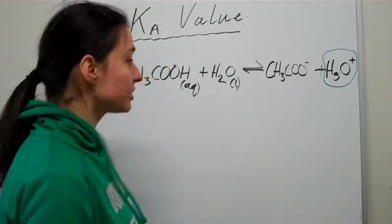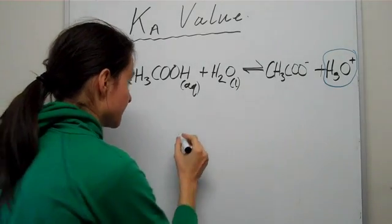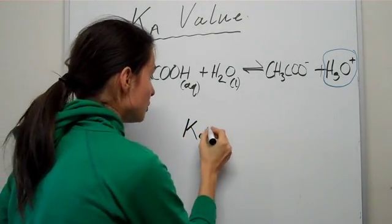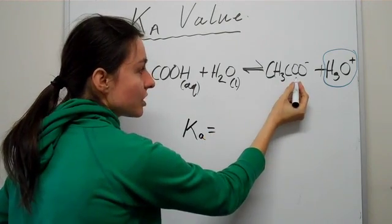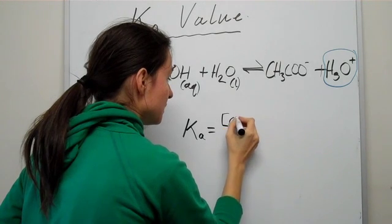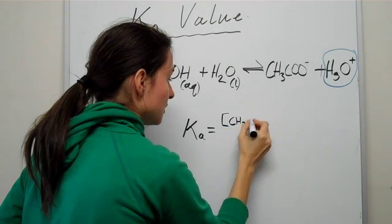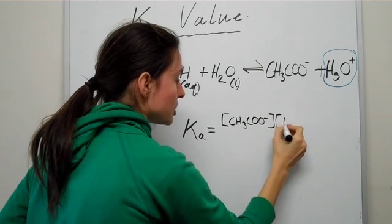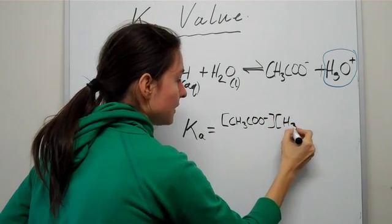Let's have a look at how we actually write out the Ka value for this. The Ka value for this particular acid would be the concentration of your ions, CH3COO minus, times by the concentration of your hydronium ions.